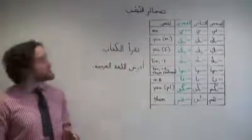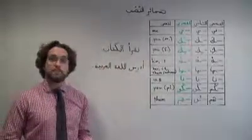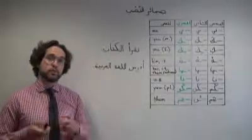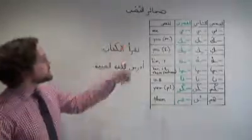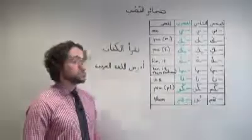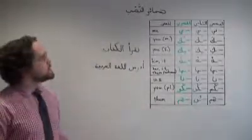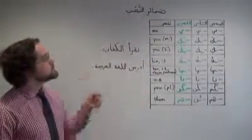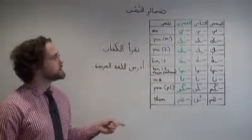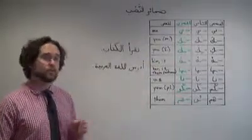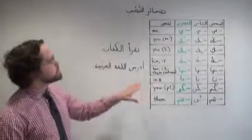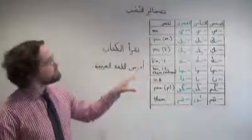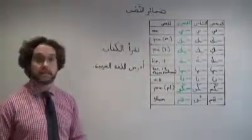Now in Arabic, we express object pronouns by using suffixes, which attach directly to the verb. Here we have a chart of all of the most commonly used suffixes, and if you've studied the possessive pronouns in Arabic, you'll see that they're virtually identical to the possessive pronouns, right down to the minor variations between العربي الفصحى MSA, and Egyptian and Levantine dialects.